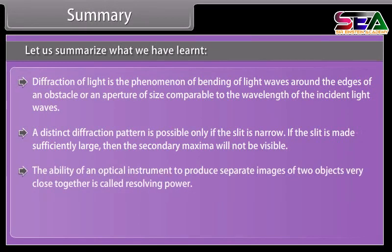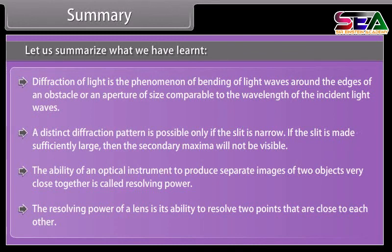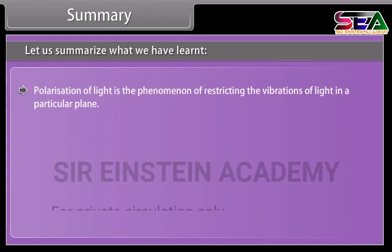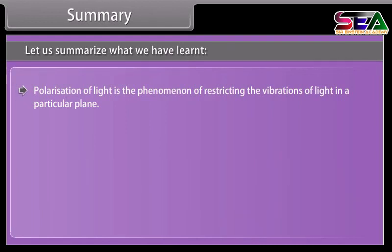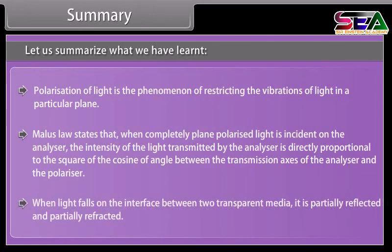Let us summarize what we have learned. Diffraction of light is the phenomenon of bending of light waves around the edges of an obstacle or an aperture of size comparable to the wavelength of the incident light waves. A distinct diffraction pattern is possible only if the slit is narrow. If the slit is made sufficiently large, then the secondary maxima will not be visible. The ability of an optical instrument to produce separate images of two objects very close to each other is called resolving power. The resolving power of a lens is its ability to resolve two points that are close to each other. Polarization of light is the phenomena of restricting the vibrations of light in a particular plane. Malus law states that when completely plane polarized light is incident on the analyzer, the intensity of the light transmitted by the analyzer is directly proportional to the square of the cosines of angles between the transmission axis of the analyzer and the polarizer. When light falls on the interface between two transparent media, it is partially reflected and partially refracted.